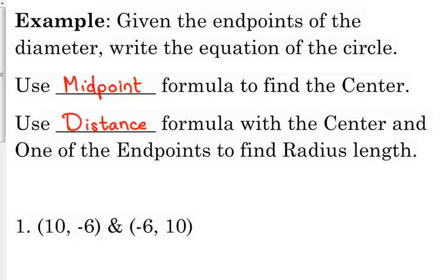Then use your distance formula with the center and one of the endpoints, because that's going to give you the radius. If you just did the distance formula with the two endpoints, then you're finding the length of the diameter, and you're going to have to divide by 2, and then you have to square it when you put it into your equation, and it's just more work than you have to do.